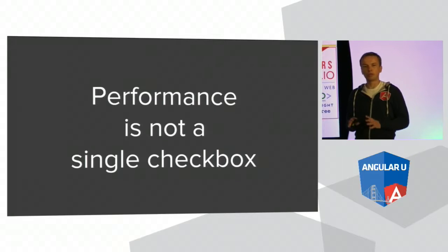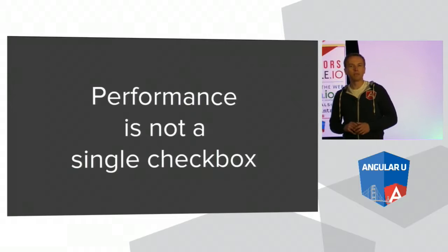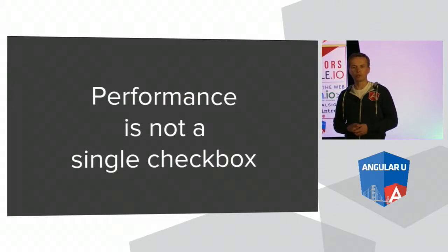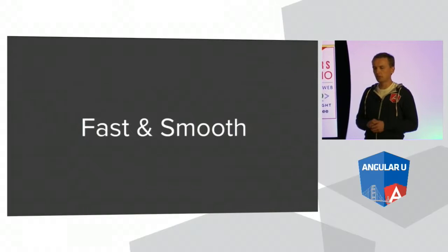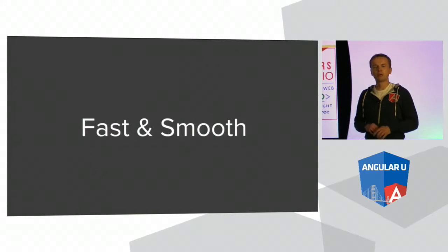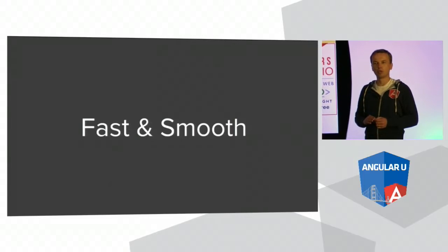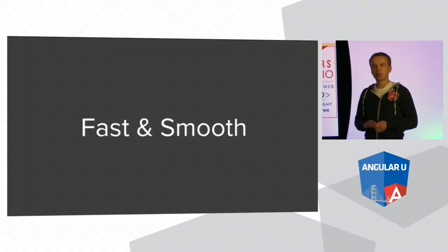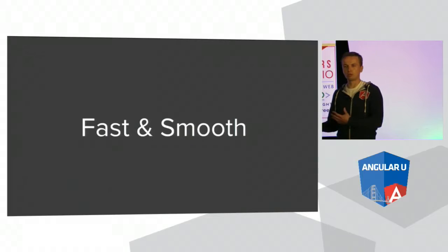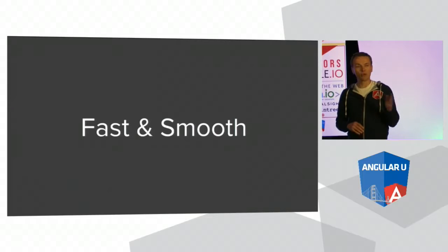I'm going to introduce you to three experiments we are conducting with other teams and members of the Angular community, aiming to improve different aspects of performance. These are just experiments at the moment — they are not production ready. But they are already having a big impact on the shape and architecture of the core framework. The first experiment is focused not only on making applications fast, but also making them smooth. Smooth applications allow us to interact with them even while the application is busy creating views and doing a lot of work in the background.